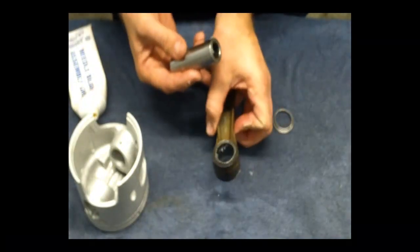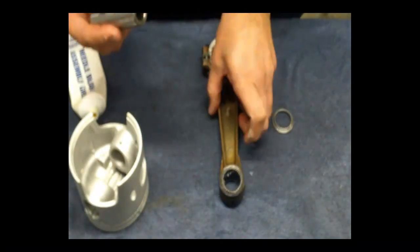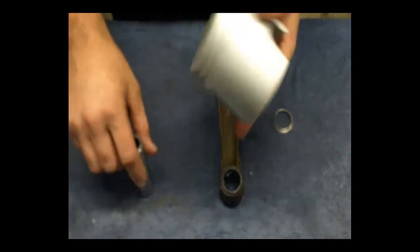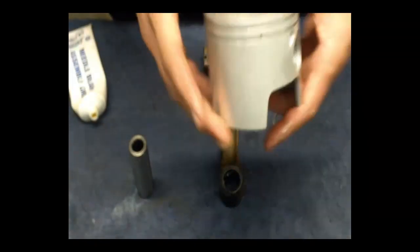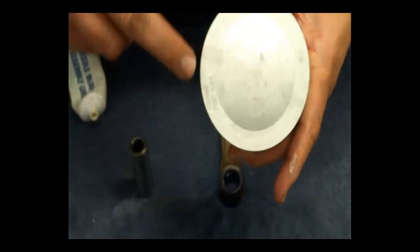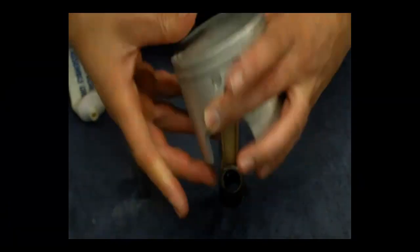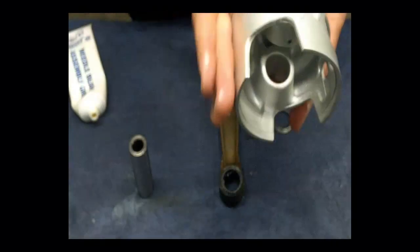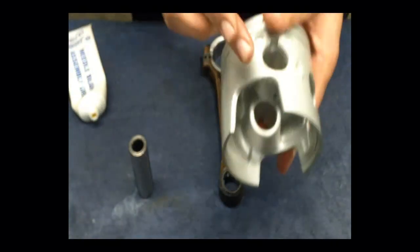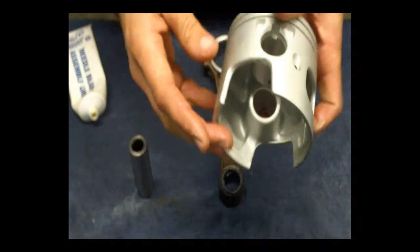Okay, now with an outboard, the piston and the connecting rod both have to face the correct way. So on this piston it has stamped on the top of it the port and exhaust side. So it's a port piston. So we know that it goes on the port side of the engine. This is the exhaust side. So that means that that has to be facing up.